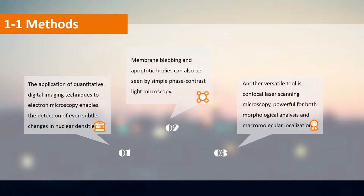These morphological changes can be detected using the electron microscope. The application of quantitative digital imaging techniques to electron microscopy enables the detection of even subtle changes in nuclear densities. Membrane blebbing in apoptotic bodies can also be seen by simple phase contrast microscopy.